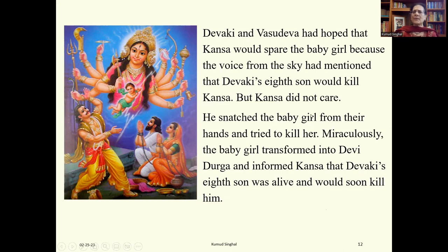He snatched the baby girl from their hands and tried to kill her. Miraculously, the baby girl transformed into Devi Durga. She had ten hands and in each hand she had a weapon. She informed Kanz that Devaki's eighth son was alive and would soon kill him. Devaki and Vasudeva are shown praying to Devi Durga, so Kanz was not able to kill the baby girl.